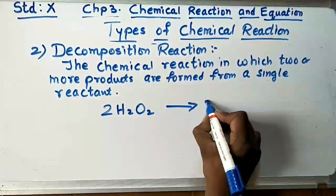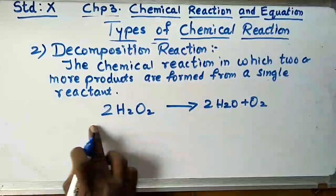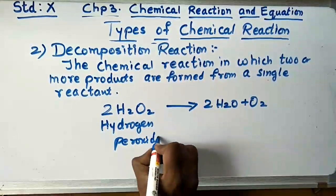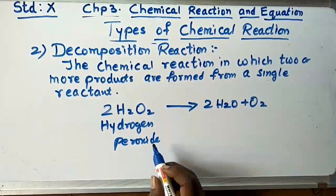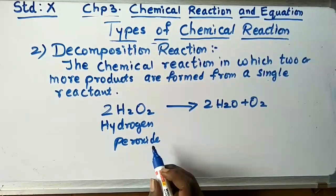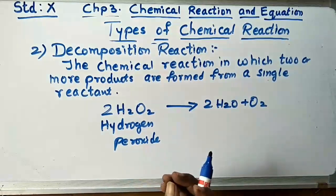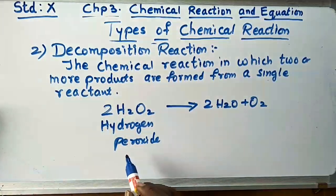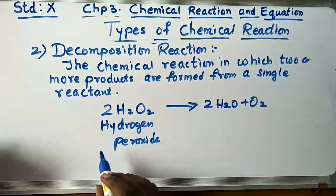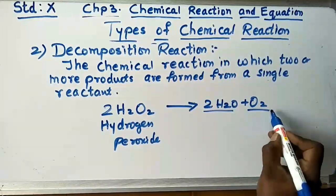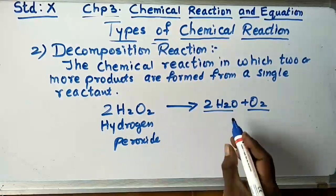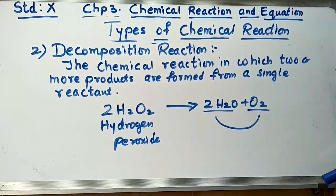One more example: 2H2O2 gives 2H2O plus O2. Now 2H2O2 is hydrogen peroxide. You may have seen hydrogen peroxide used by doctors to clean wounds — that white solution that looks like water. When hydrogen peroxide decomposes, it becomes water and oxygen is released out. A single reactant forms two different products, so this is a decomposition reaction.